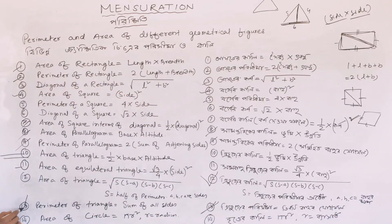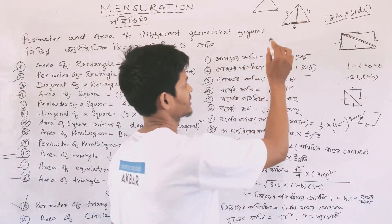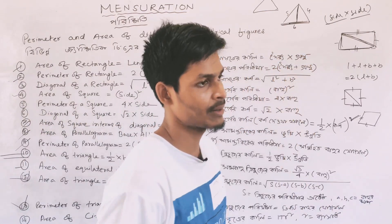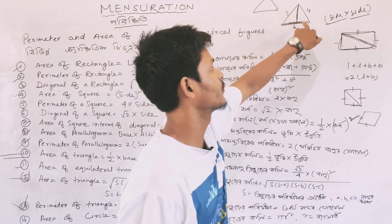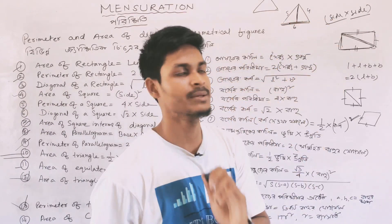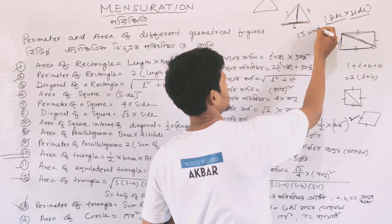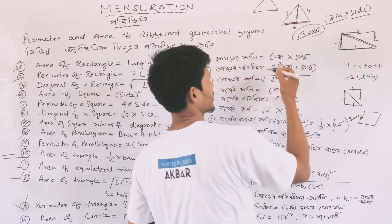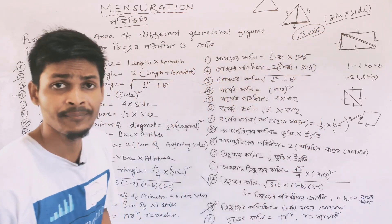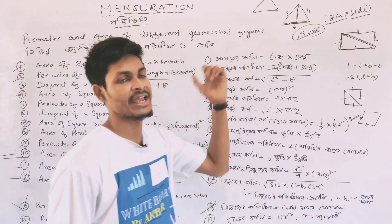Next, perimeter of triangle is the sum of all sides. If a triangle has sides 5, 4, and 6 — or sides like 5, 11, 12 — then the perimeter is the total, for example 15 units. So the perimeter of that triangle would be 15 units.